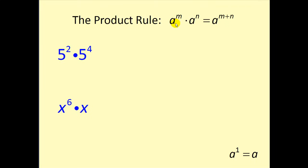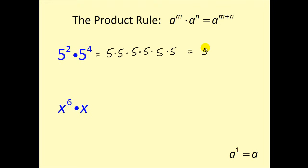The first property is the product property. It states that if you're multiplying and the bases are the same, you add the exponents. Let's take a look at why that makes sense. If we want to multiply five to the second times five to the fourth, we know that five to the second means five times five, and five to the fourth would be four factors of five. So we can count the total factors of five and see we're going to have six factors of five.